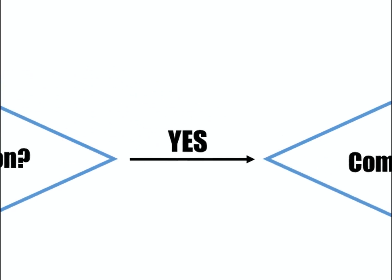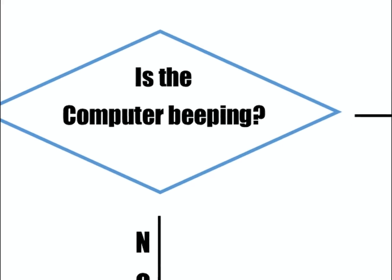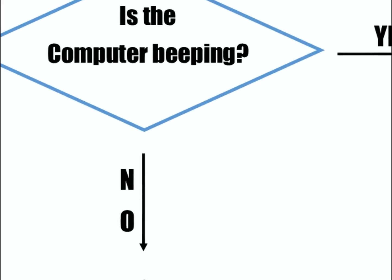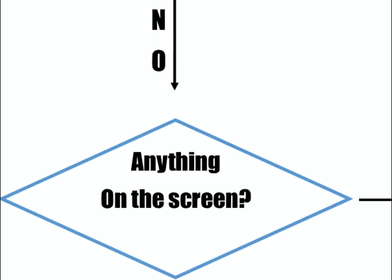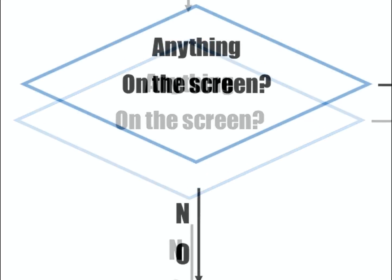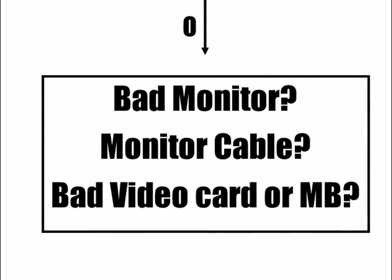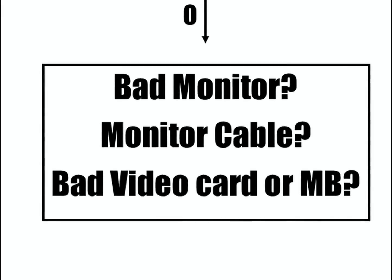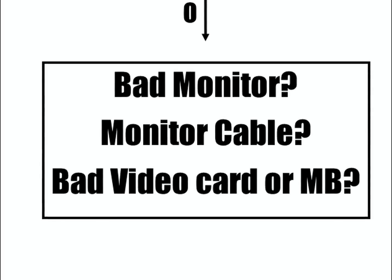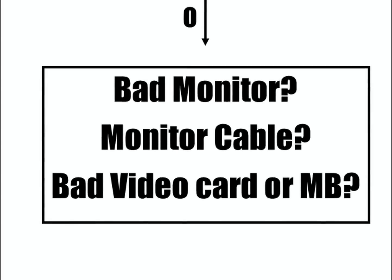Let's assume that the computer turns on and it's not beeping. The next step is are we getting anything on the screen at all? If we're not getting anything on the screen, it could be a bad monitor — at that point, let's try a different monitor. It could be the cable itself for the monitor. Check power to the monitor and make sure the monitor light is turning on. It could also be a bad video card or bad motherboard.